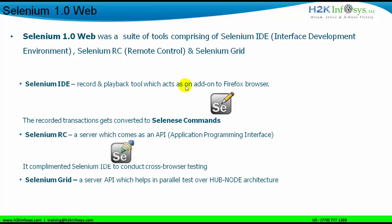The third tool in Selenium 1.0 is Selenium Grid. It is also a server-based API that you need to download from the Selenium website and configure on your machines. Selenium Grid is used for parallel testing. For parallel testing, you create an architecture with a hub and nodes. The hub is the machine on which Selenium Grid is configured, and the nodes are machines connected to the hub. Through this hub-node architecture, you are able to conduct parallel testing.